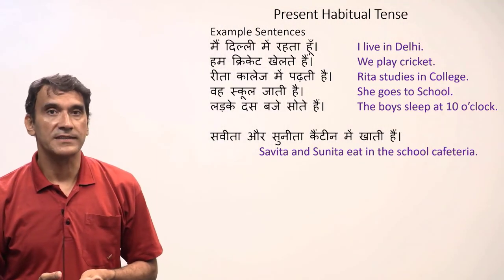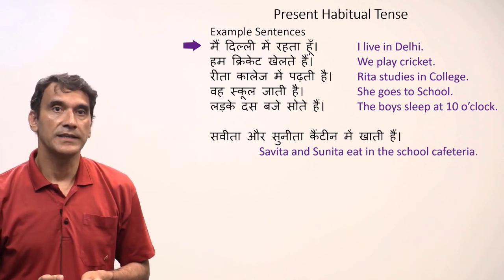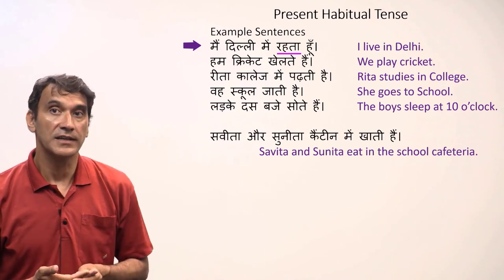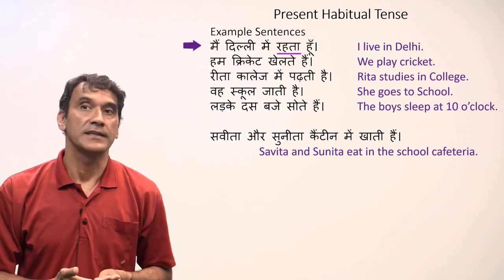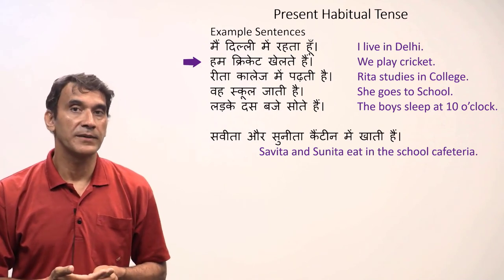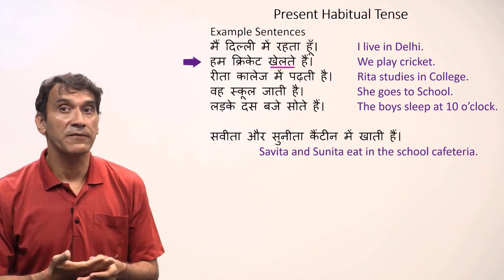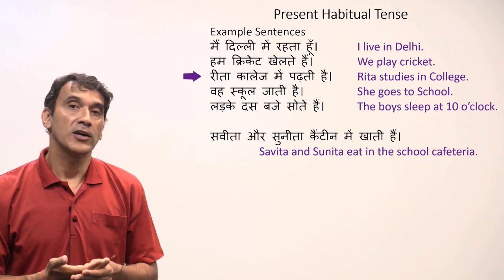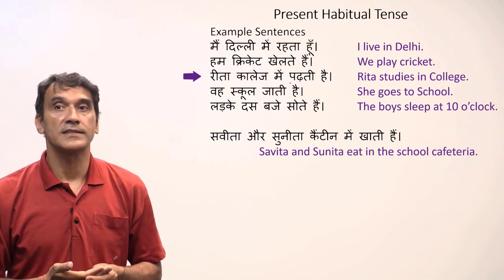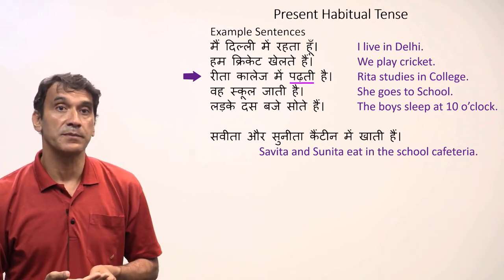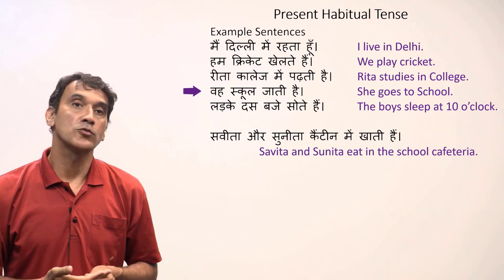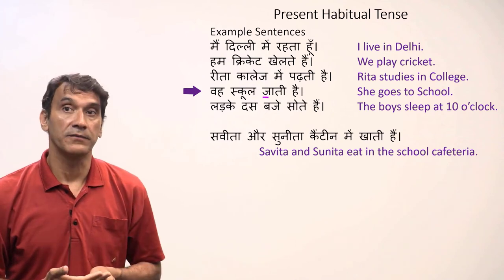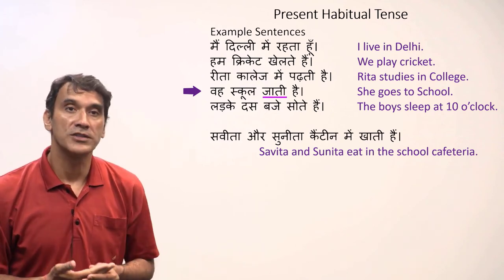Let's take some example sentences. 'Main Delhi mein rehta hoon' — I live in Delhi. The verb is 'rehna' (to live) and the subject 'main' is masculine. 'Hum cricket khailtay hain' — we play cricket; the participle is plural because the subject 'hum' is plural. 'Reeta college mein padhti hai' — Reeta studies in college; Reeta is a girl, so the feminine participle 'padhti' is used. 'Woh school jaati hai' — she goes to school; 'wo' is feminine, shown by the participle 'jaati.'